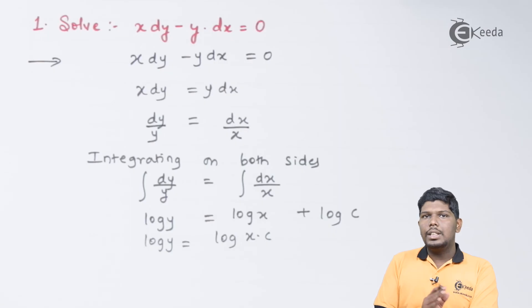As on the both sides we have only single term log, we can take anti-log in order to eliminate the log term. So after taking anti-log, we have y is equal to xc.